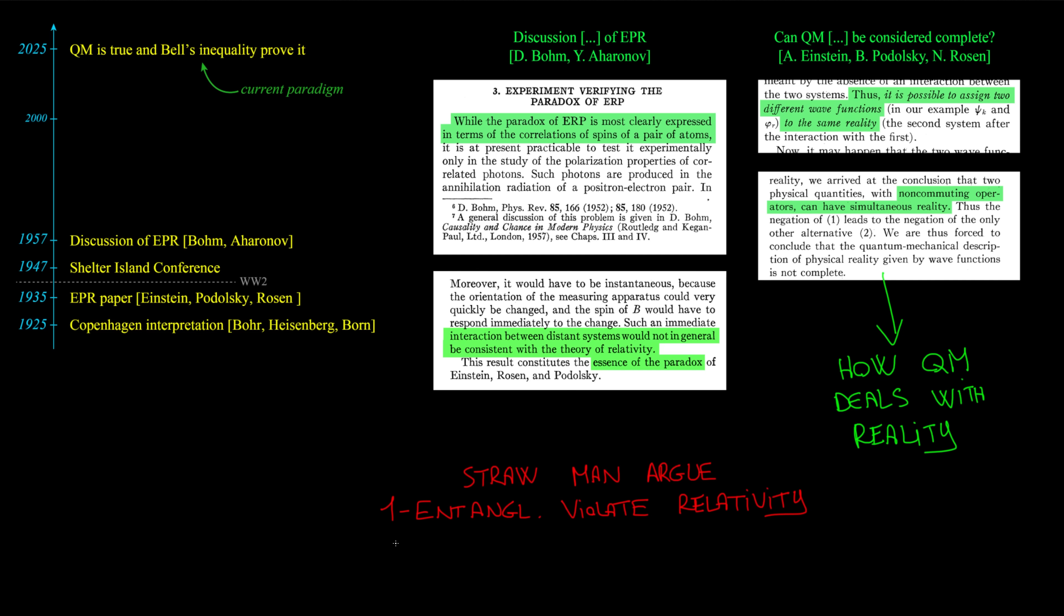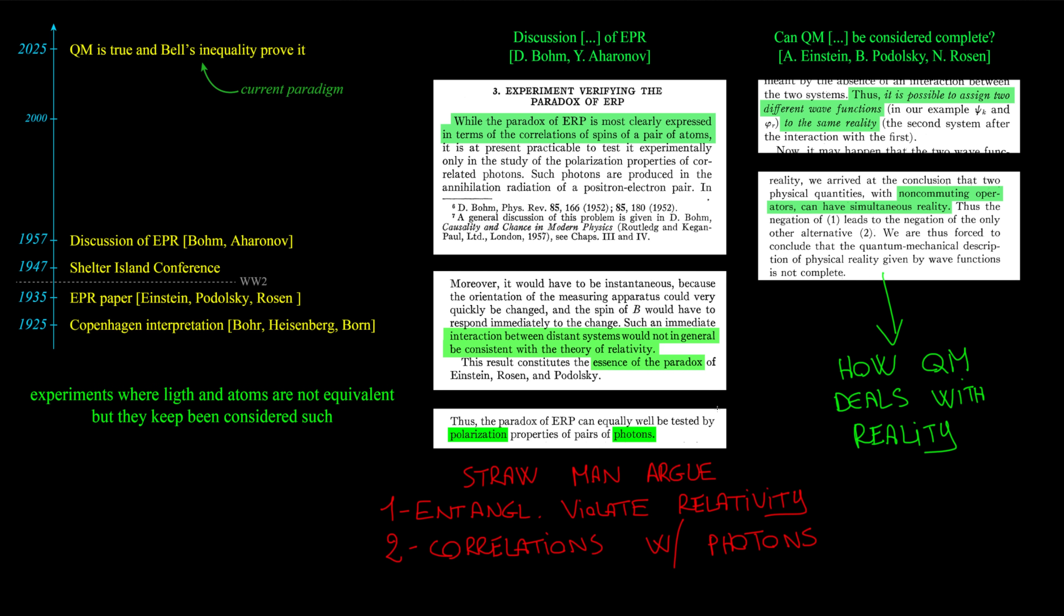Aronov and Bohm end up counting correlation with entangled pairs of photons measured at different angles, because they state it is equivalent to experiment with polarized light in place of atoms. Even if they have similar mathematical treatment, this approach leads to the execution of experiments where light and atoms are not equivalent, but they keep being considered such. Aronov and Bohm arguments are never being corrected, and they are instead inherited by all the following publications including the current ones.